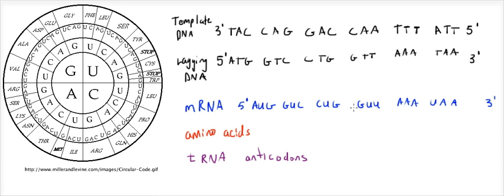Now we have our strand of mRNA and we want to translate that into amino acids. So if we look at our table here, we go A, U, G — that's Met, that's the start codon, and that's what signals where translation should begin.